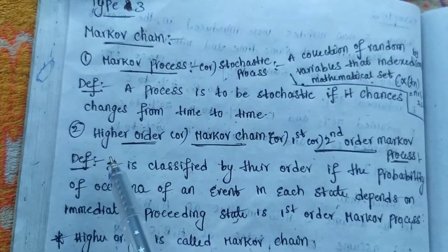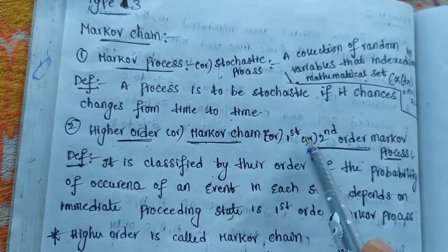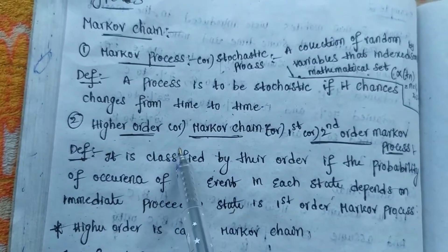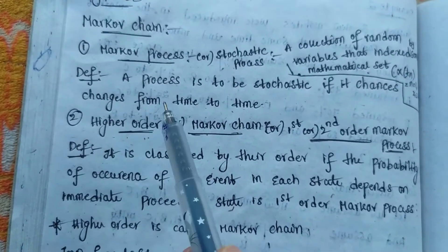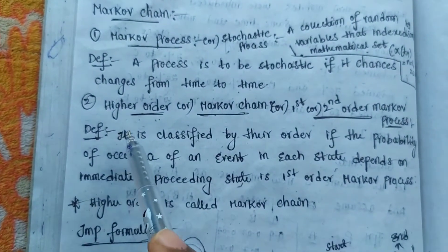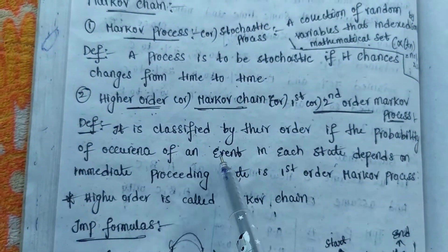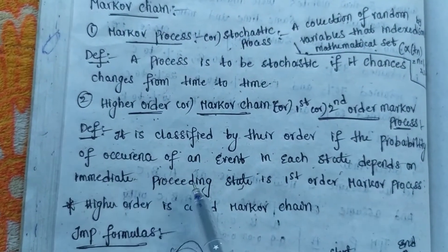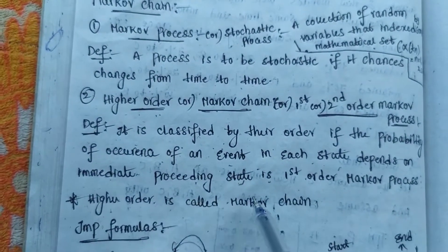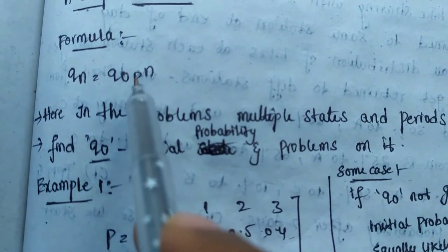The next important definition is higher order Markov chain, or first or second order Markov process — these three are the same. The definition of Markov chain: it is classified by its order. If the probability of occurrence of an event in each state depends on the immediate preceding state, it is a first order Markov process. Higher order is called the Markov chain.